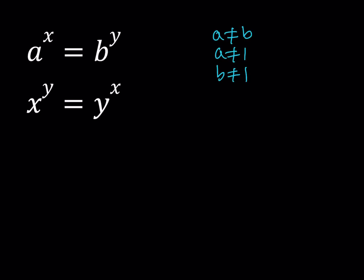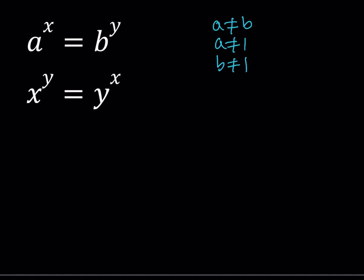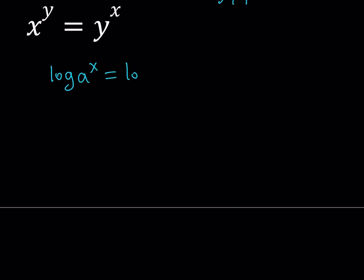Now let's go ahead and start with the first one here. I'm going to log both sides and that's going to give me log a to the power x equals log b to the power y. Using the power property I can write this as x log a equals y log b.